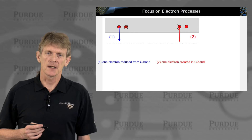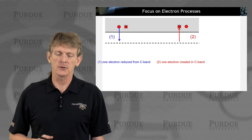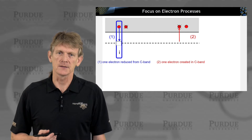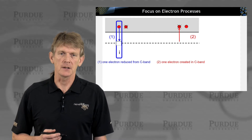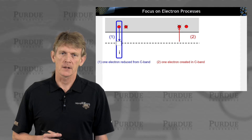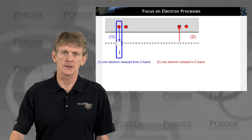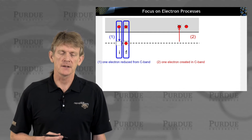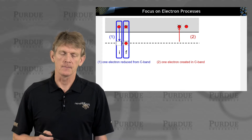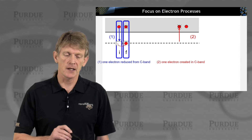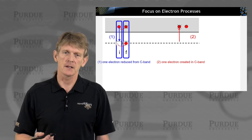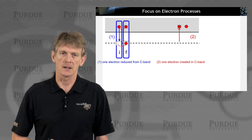Let's focus on these transitions — initial and final states — and derive some rates that relate electrons to traps and holes to traps. We're going to look first at one electron being reduced from the conduction band. The initial state must have an electron in the conduction band and an empty trap — a hole-occupied trap. The final state is an electron destroyed in the conduction band and an electron sitting in the trap. So we go from an empty trap to a filled electron trap, and from an electron existing to an electron being destroyed.